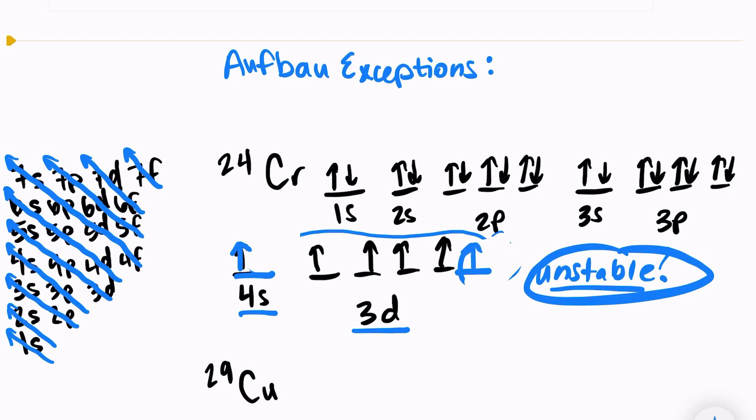So if we were to write out the electron configuration, we would have 1s2, 2s2, 2p6, 3s2, 3p6, 4s1, 3d5, because it is very unstable for d to be left with an empty orbital. So we move one electron from 4s into 3d.